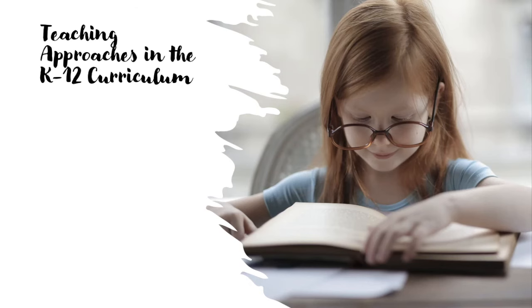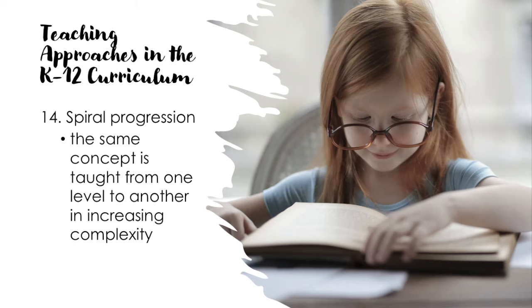To complete our teaching approaches in the K-12 curriculum, we have the last one: spiral progression. This means the same concept is taught from one level to another in increasing complexity. A student from first grade until the last grade of basic education is being taught the same concept, but the concept becomes harder as the student progresses from lower to higher grades — same concept taught from one level to another with increasing difficulty.